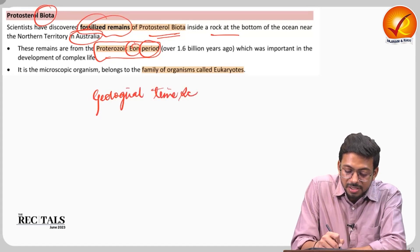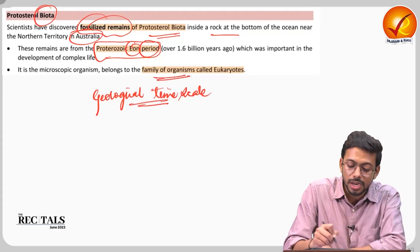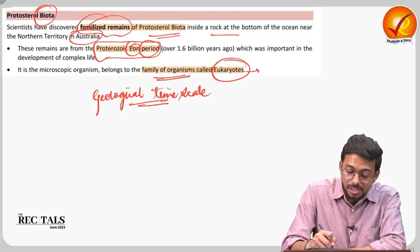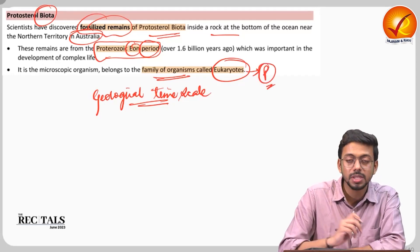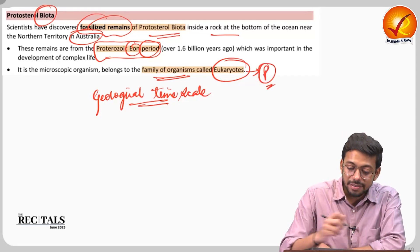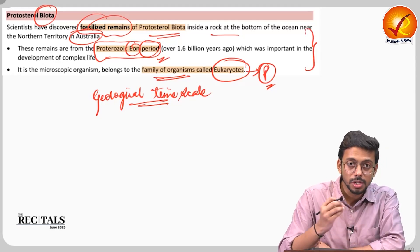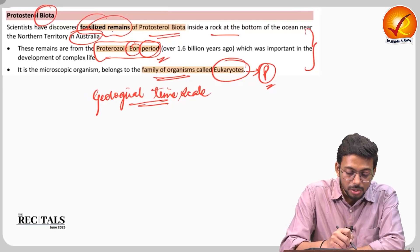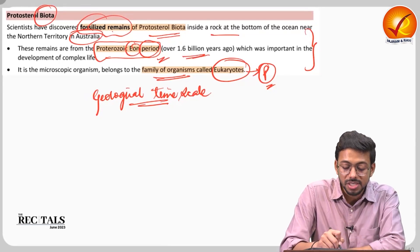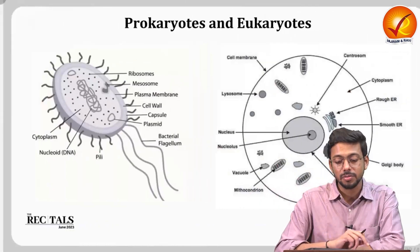These remains belong to the family of organisms known as eukaryotes, so we'll see what exactly a eukaryote is and what a prokaryote is. We'll also look at the importance of the discovery — this particular fossil belongs to 1.6 billion years ago.